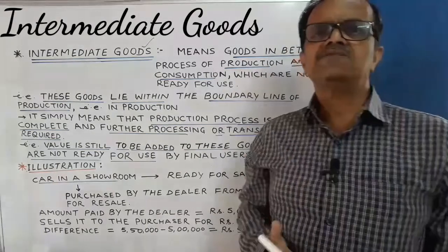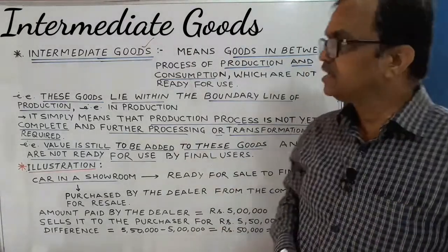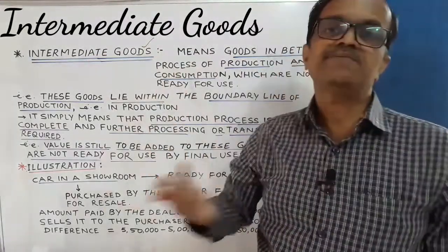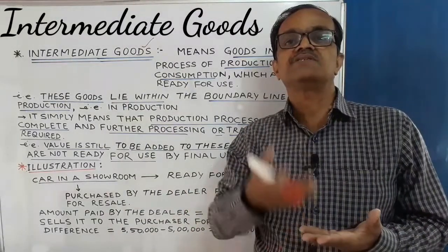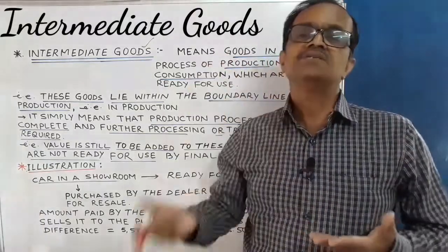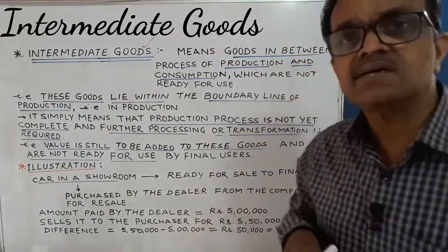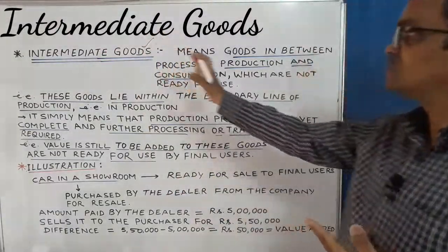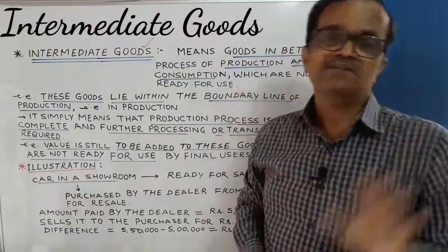Now let us start with the meaning of the term intermediate goods. Intermediate means in between. Goods means those commodities which satisfy human wants — any commodity that fulfills a person's needs is called goods. In between means those goods that lie in between the process of production and consumption.